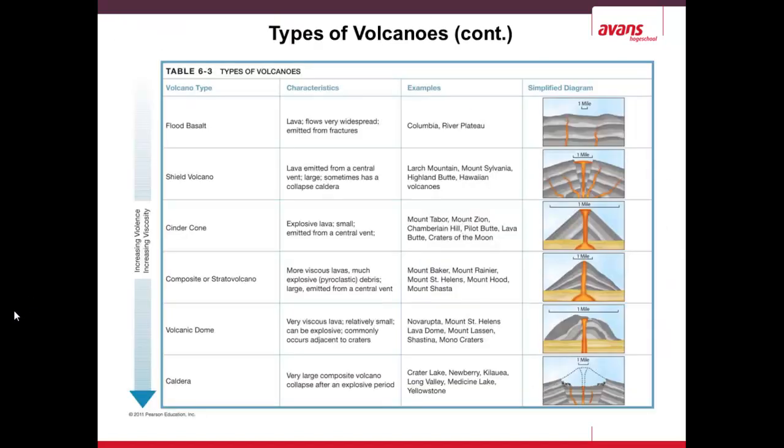Here we have a comparison of the different types of volcanoes. Increasing violence goes from flood basalts at the top, continuing to shield volcanoes with their small, gently sloping profile, then the cinder cone which is more explosive but still relatively small, compared to a composite or stratovolcano with very steep and complex layering. Even more complex layering, but sometimes relatively smaller, is the volcanic dome. And the largest, with the most viscosity and most violent eruptions, are the calderas.